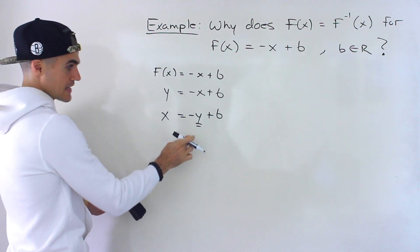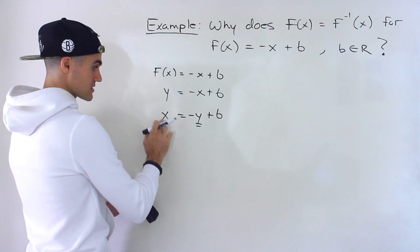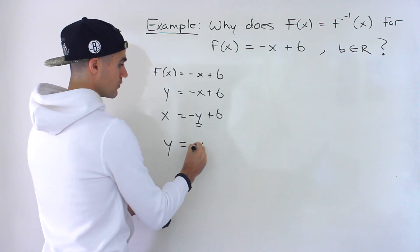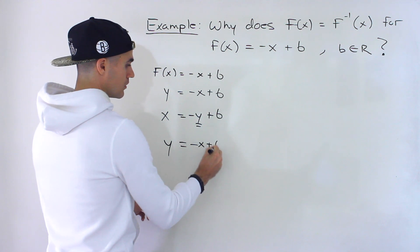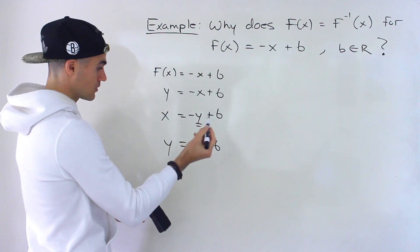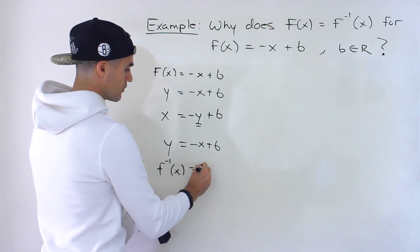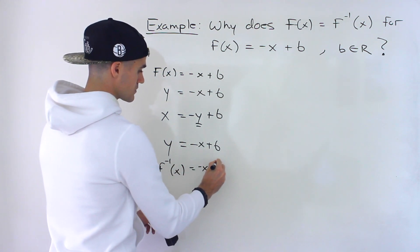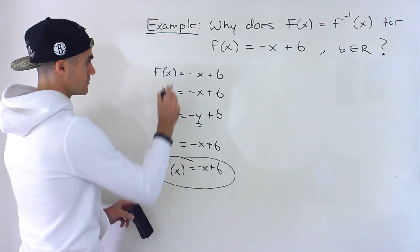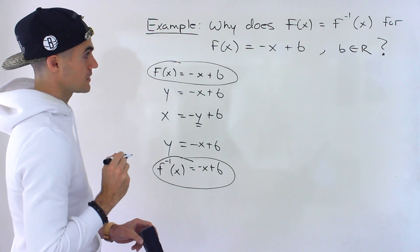When we isolate for it, that's going to give us the inverse. If we were to isolate for this y, we would bring it over to make it positive, then bring the x over. We would end up with the exact same function that we started with. So the inverse is negative x plus b when the function is negative x plus b.